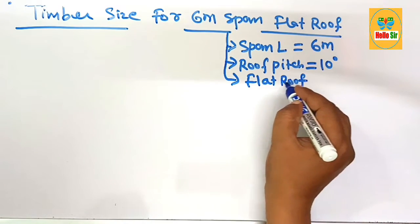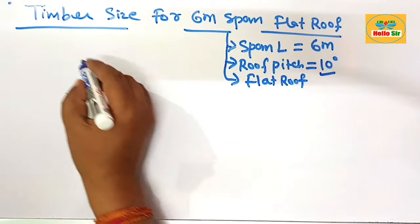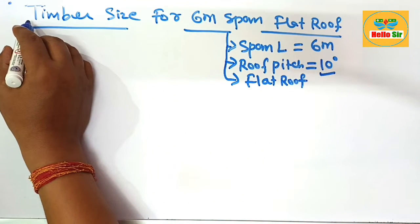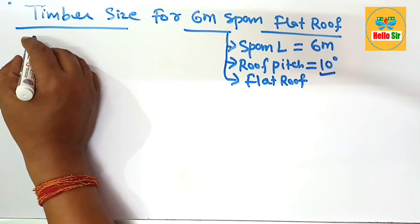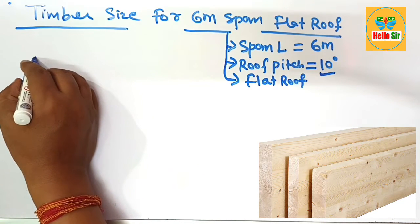It means for flat roof the maximum roof pitch is about 10 degree and you have to find out the timber size. The size of timber means you have to find out what will be their width and depth section of the joist.